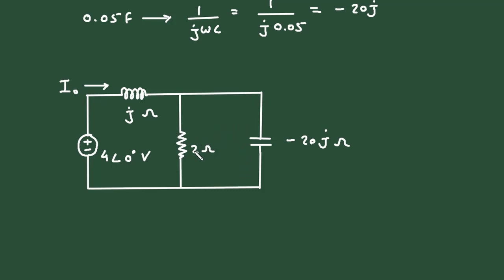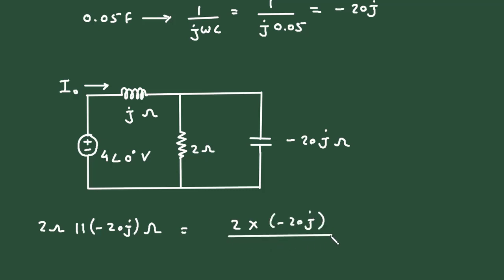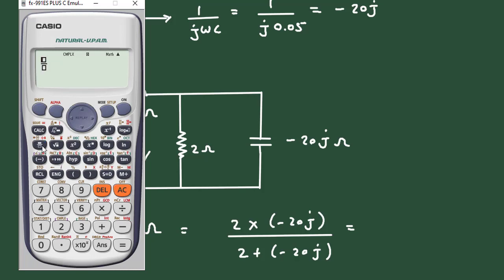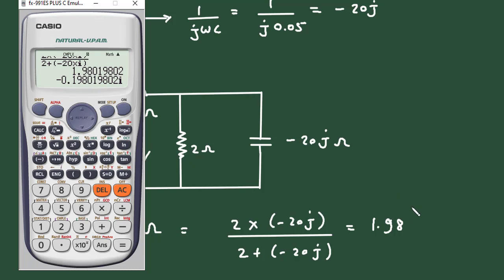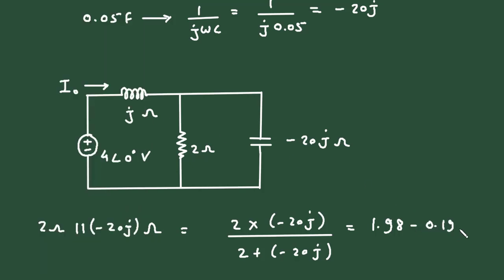We can now find the impedance. The 2 ohm resistor and minus 20j ohm capacitor are connected in parallel. Their parallel combination equals (2 × (−20j)) / (2 + (−20j)), which we solve in the calculator as 1.98 − 0.198j ohm.